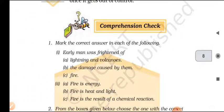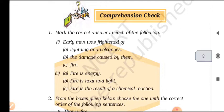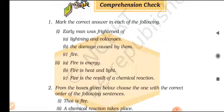Now let's have a quick check on comprehension. Exercise one — mark the correct answer. Question one: Early man was frightened of — options: a) lightning and volcanoes, b) the damage caused by them, c) fire. The correct answer is option c — fire.